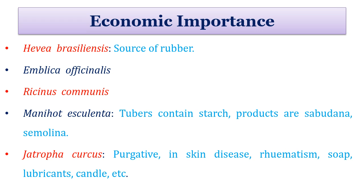These are some important economic uses. Hevea brasiliensis is a source of rubber. Emblica officinalis is medicinally very important as well as edible. Ricinus communis, Manihot esculenta, and Jatropha curcas are other economically important medicinal plants.